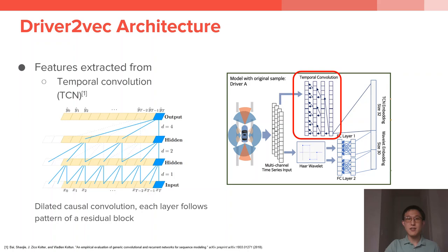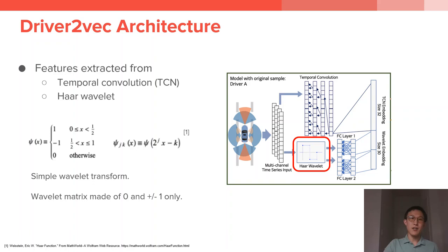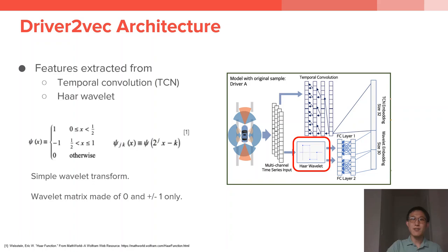The second path is Haar wavelets, as mentioned in previous works. We use the Haar transform to extract frequency domain information. The Haar wavelet transformation matrix is simply made of zeros and plus or minus ones, as shown in the expression. We then join the Haar wavelet features with features from TCN, so the embeddings contain information from both TCN features and wavelet features.